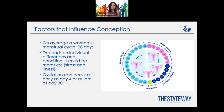Depending on the individual and the situation they're going through, this cycle might differ from person to person. For example, if you have stress or are going through a difficult situation, it might affect your menstrual period — you might have a longer or shorter cycle. But the key point is that ovulation always occurs right after the period, around days 13, 14, and 15.